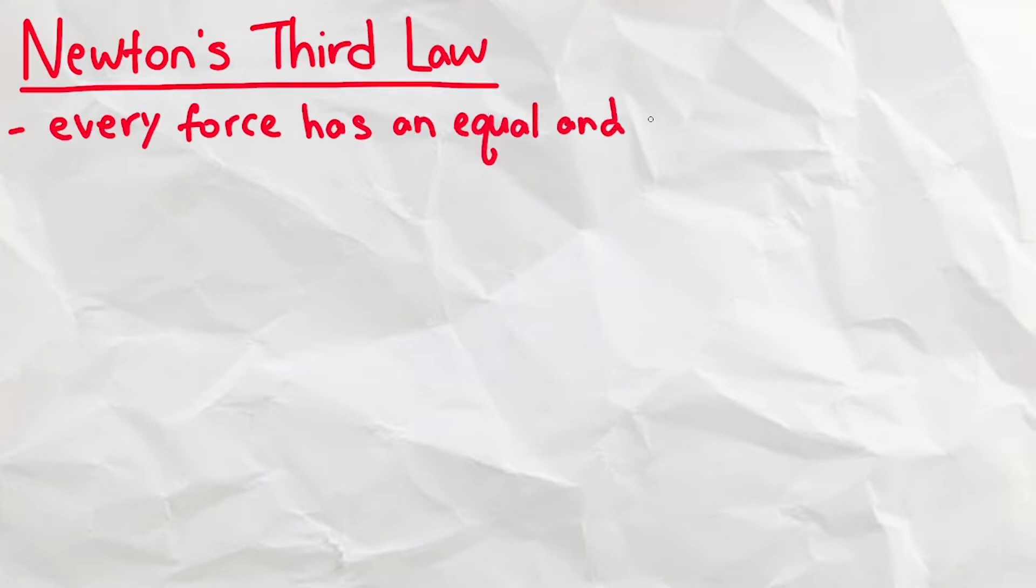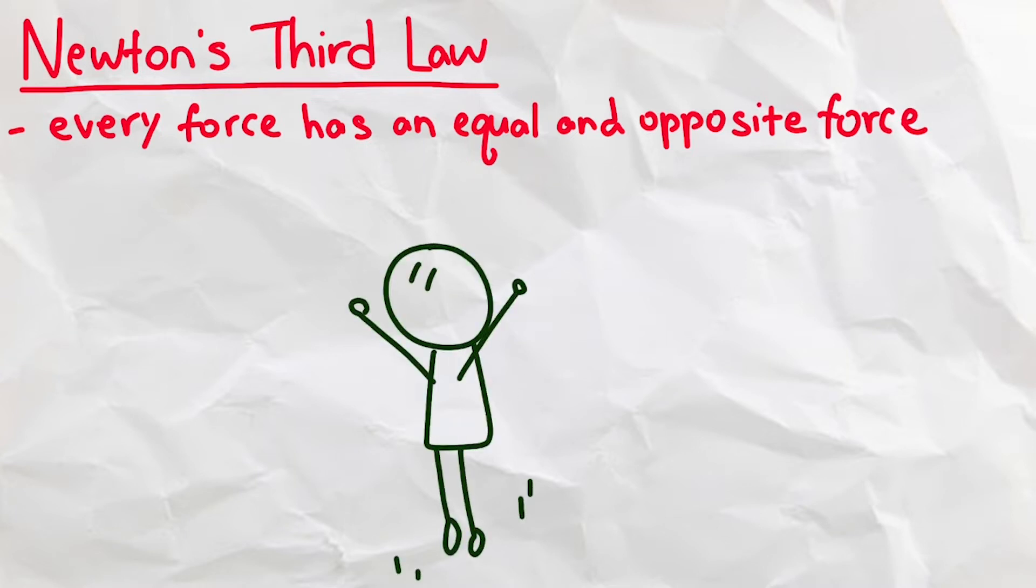To begin, we'll have to get off the ground first. So the first principle we need to go over is Newton's third law. Every force has an equal and opposite force. So if we want to use x amount of energy to jump a certain height, we have to expend the x amount of energy pushing into the ground, which will push us up and make us jump.